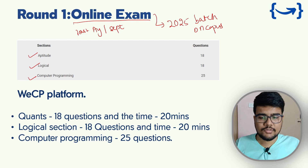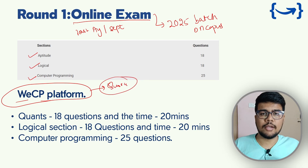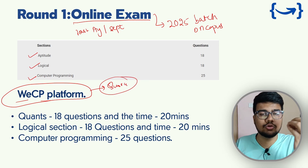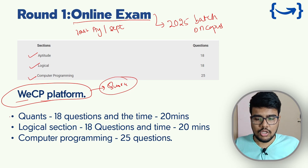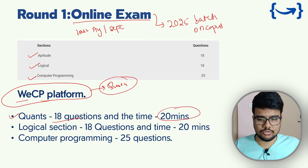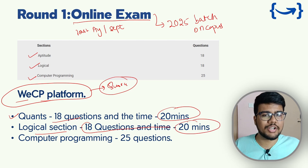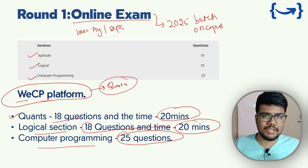The test will be on the VCP platform, so be aware of this platform. Go to Quora and study about it, as some platforms have glitches you should know before sitting the exam. Quants: 18 questions, 20 minutes. Logical section: 18 questions, 20 minutes. Computer programming: 25 questions, also with a similar time allocation.